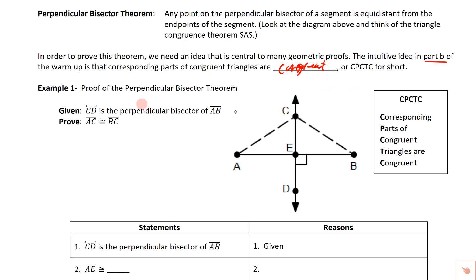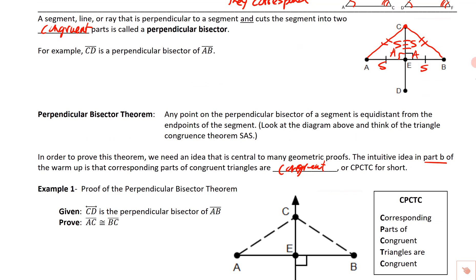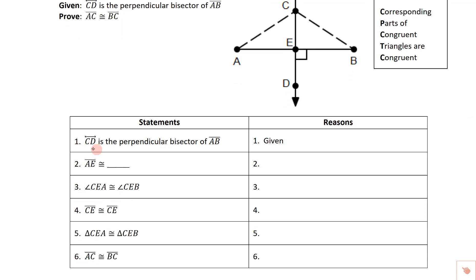We want to prove the perpendicular bisector theorem. We're given that CD is the perpendicular bisector of AB. What we want to prove is that if you pick any point on that perpendicular bisector, AC is going to be congruent to BC. So in our proof: statement one — line CD is the perpendicular bisector of AB — reason: given. Statement two — AE is congruent to BE — reason: definition of a bisector, because a bisector cuts things in half.